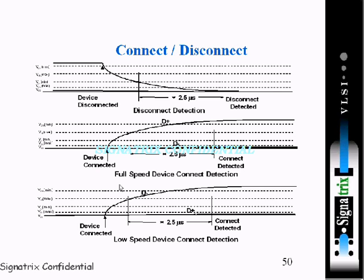In the case of full speed device connection, as soon as the device is connected, the D plus line will gradually have its voltage from zero and it will gradually rise above the threshold voltage, that is Voh. For a period of 2.5 microsecond it will check if it's greater than 2.5 microsecond, that is a particular threshold, and from that it starts the connection.